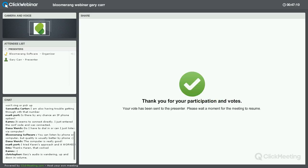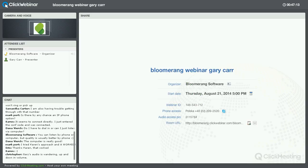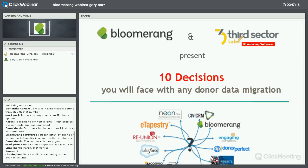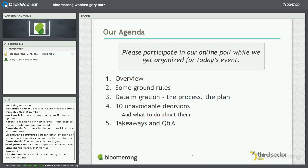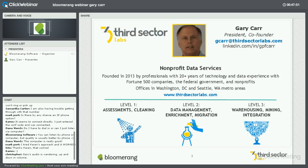I'm going to stop sharing the results and take us over to the presentation. Thanks again everyone for being with us today, and thanks to Bloomerang for hosting this event. We've got a short agenda: after the general overview, we've got some ground rules to talk about related to data, data systems, and data migration. Then we'll look at the process and planning around donor data migration, jump to the 10 unavoidable decisions, and then cover takeaways and Q&A at the end.